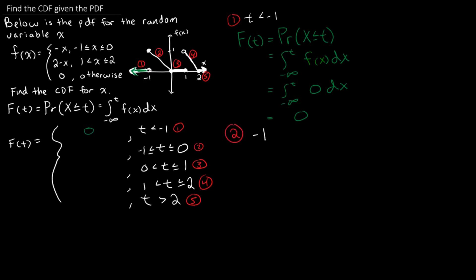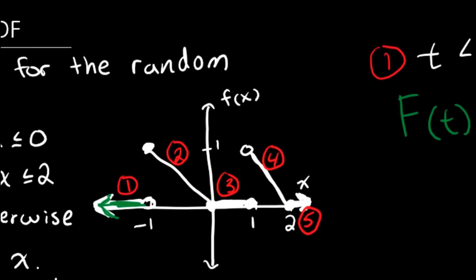Let's move forward to the second piece of the CDF where t is between negative 1 and 0. We have the definition of a CDF where F of t is equal to the integral from negative infinity to t of the PDF with respect to x. To find this integral, we need to be considerate of the fact that the PDF function is a piecewise function. Therefore, this integral is going to have multiple pieces. Starting at negative infinity, the PDF takes on the value of 0 until x gets to negative 1. Next, the PDF takes on the value of negative x, which is this linear line, when x is between negative 1 and whatever t is. Right now we do not know what t is — it's just some number between negative 1 and 0.